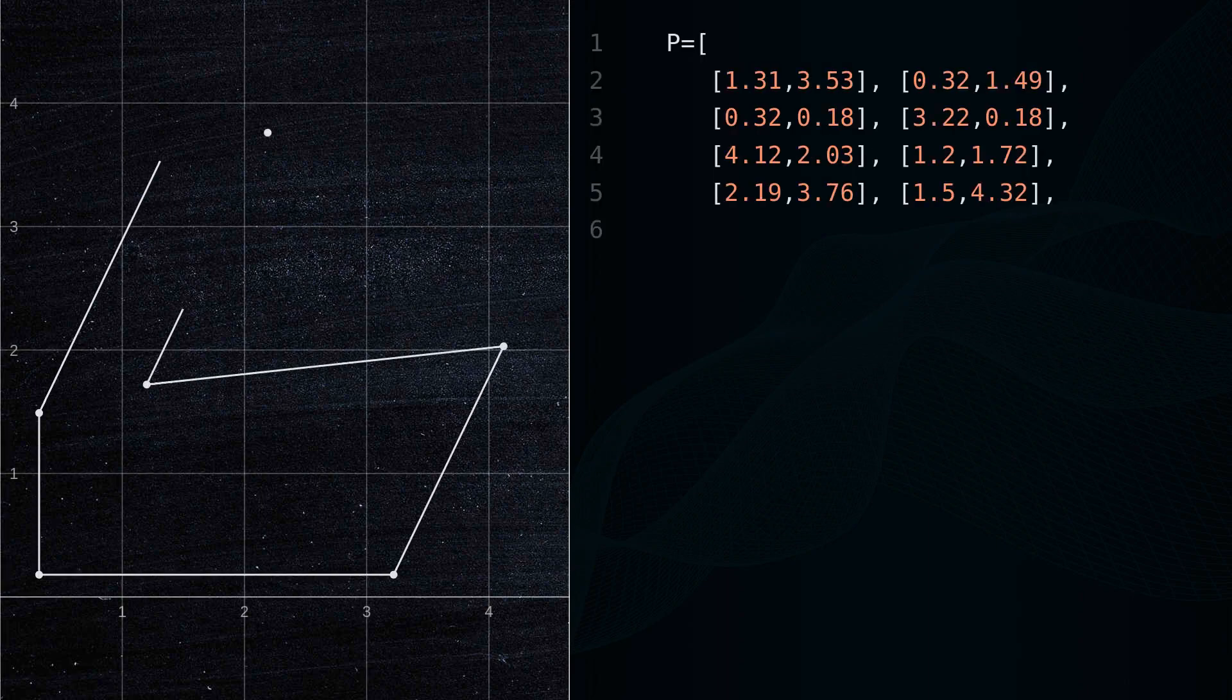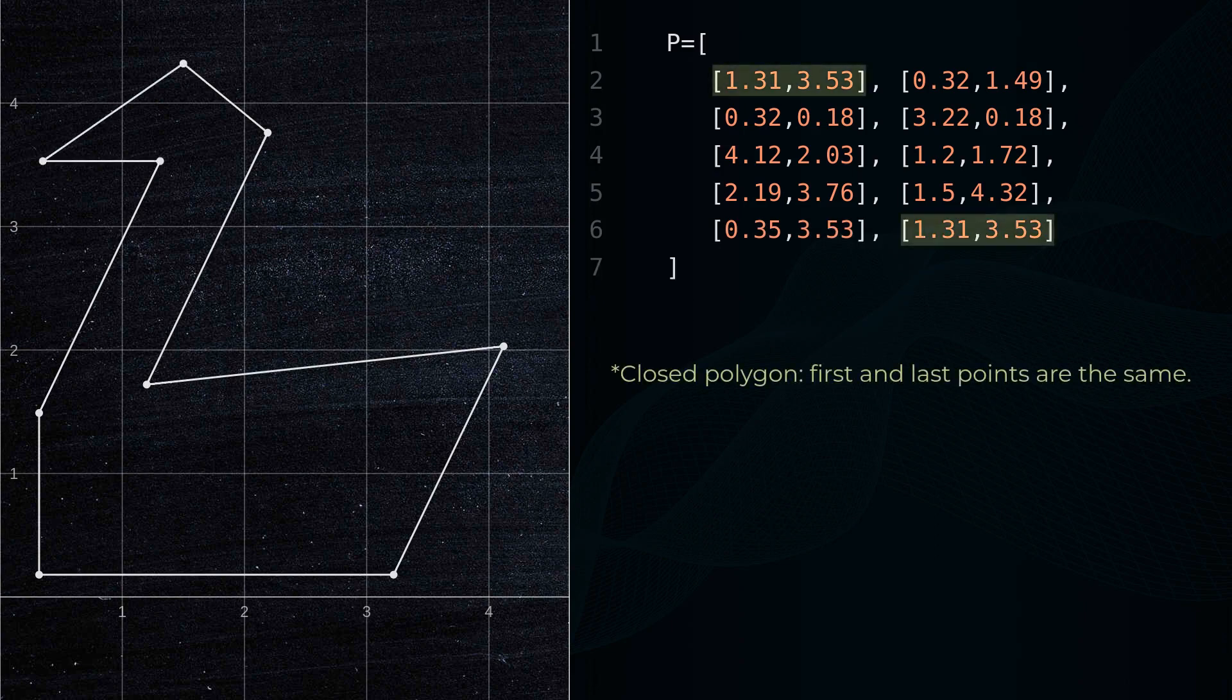Suppose we have a set of points that form a closed polygon. We can check if a given point is inside or outside this polygon using the ray casting algorithm.